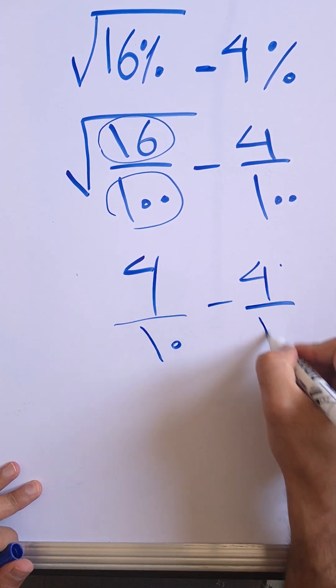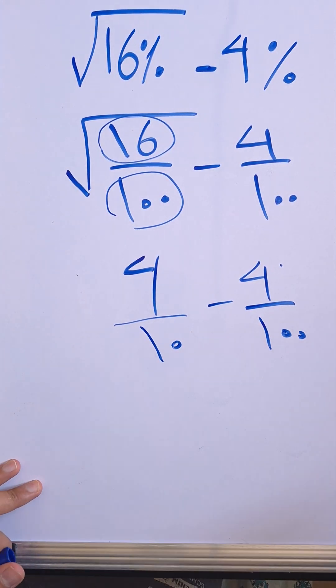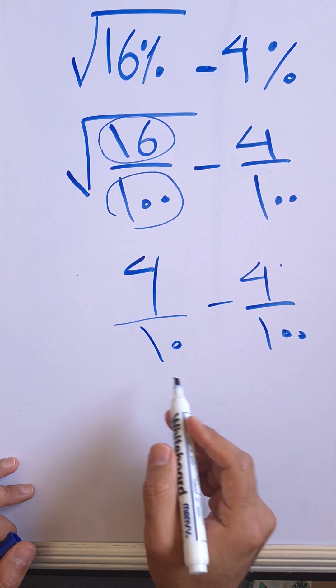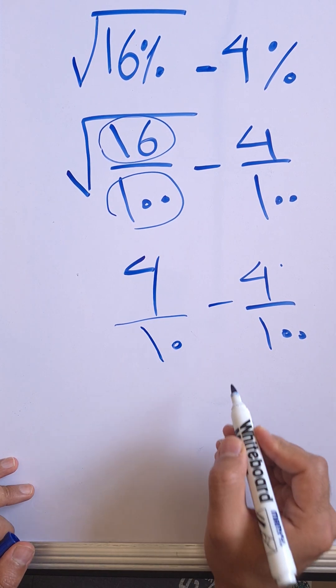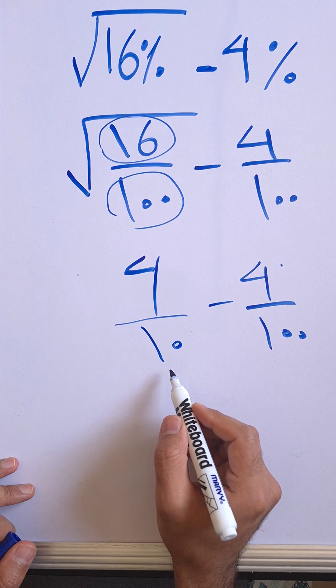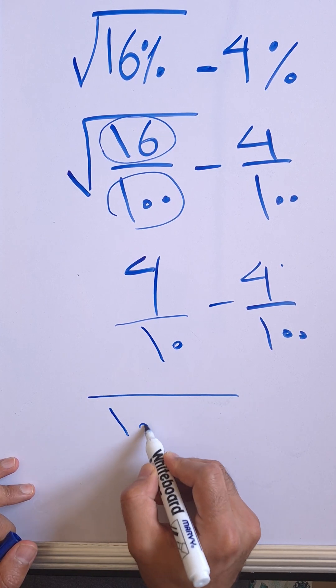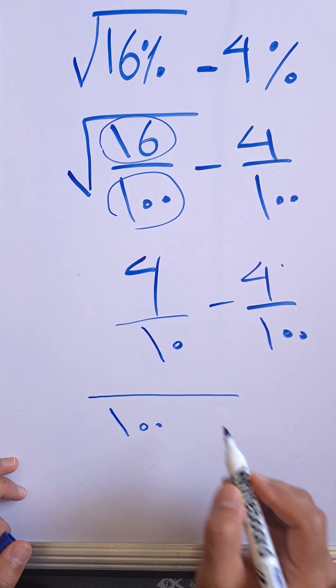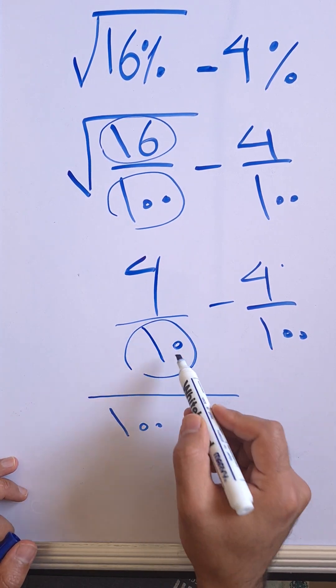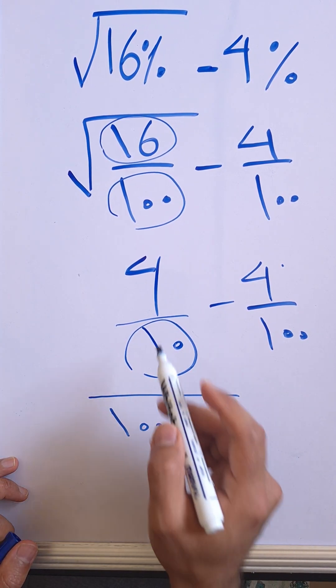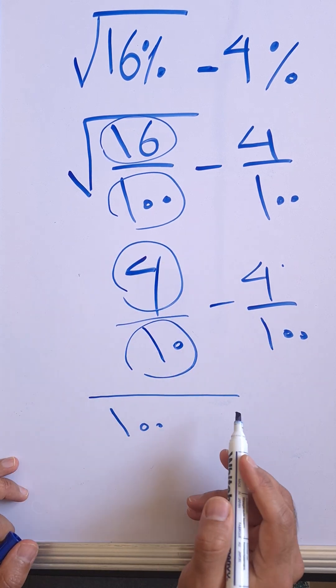So 4 over 10 minus 4 over 100. We use the common denominator here. The common denominator is 100, and then I'm going to multiply this one, 10 by 10, and then the numerator as well.